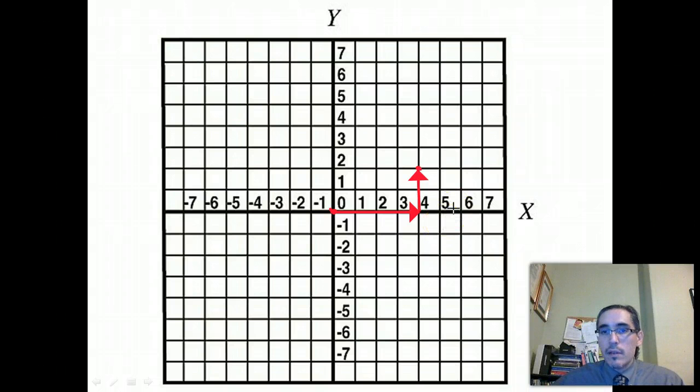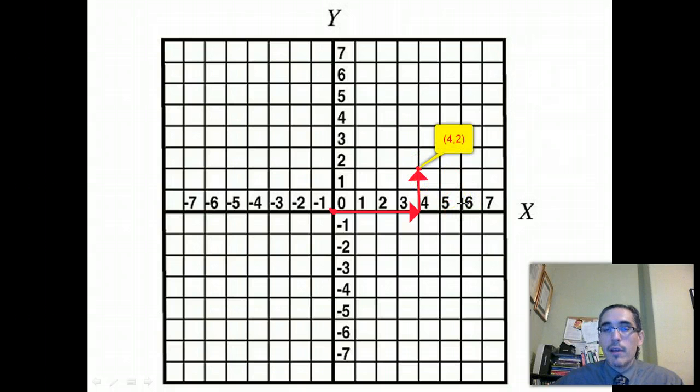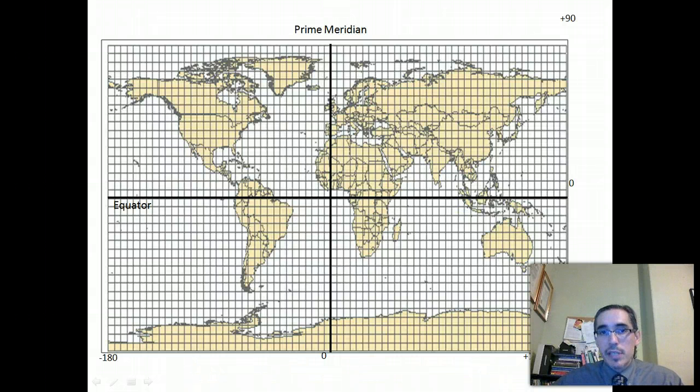So the coordinates for that location, for that position of that dot right there, is 4, 2. And that's it, essentially. So our reference being the origin of this graph and we've established the distance, we have the position, as long as we're working within this particular space. The same basic thing applies to the Earth, just on a slightly larger scale.